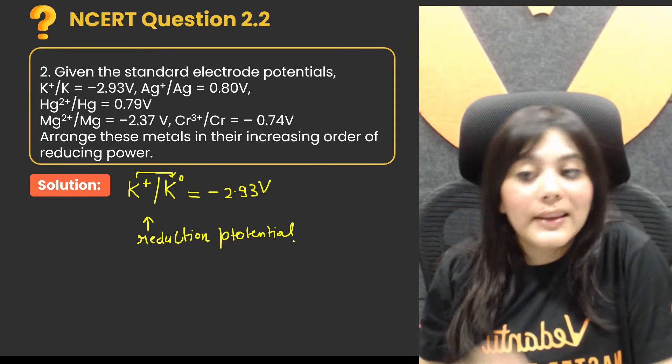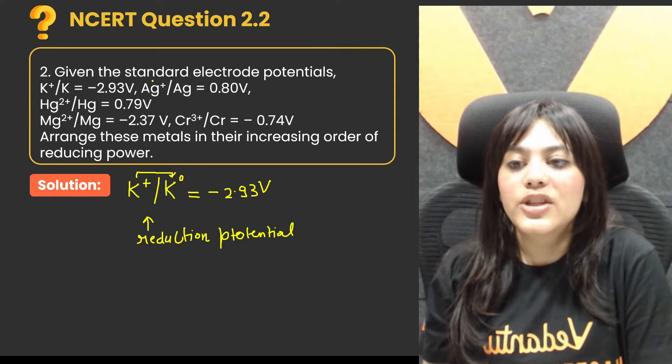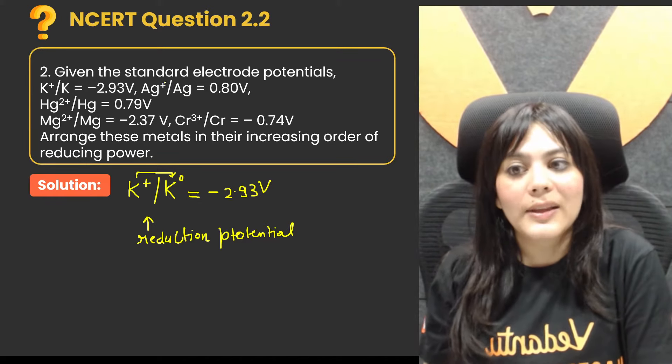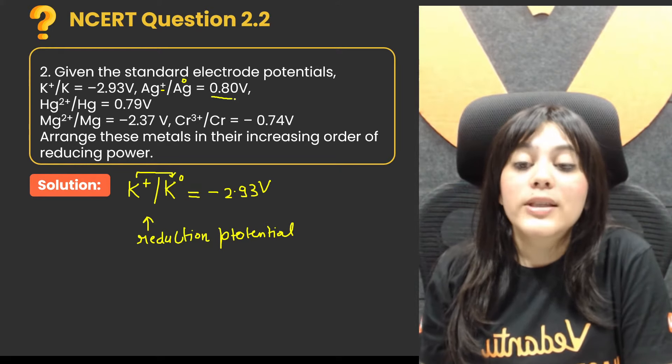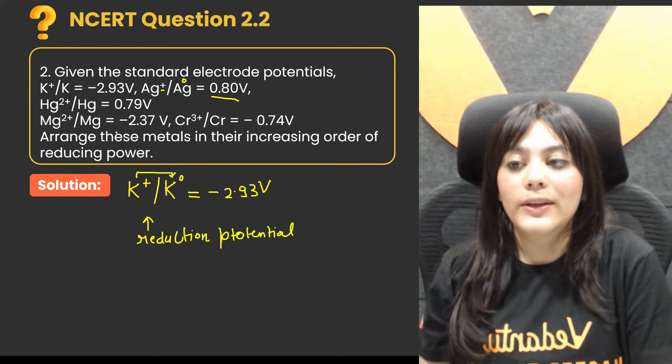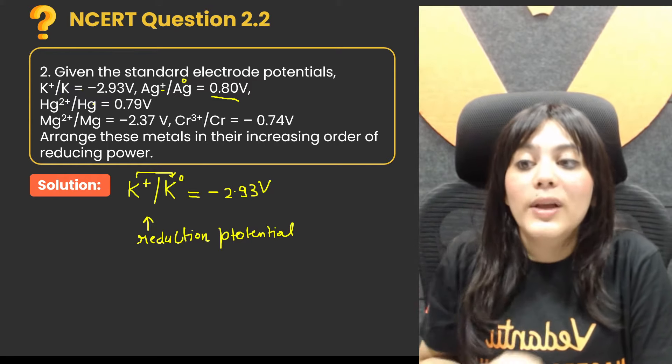This means that you understand, now here is the same. Ag+, when you go to the zero oxidation state, you have 0.8 volts. Then you have to look at this. Now it is the same.